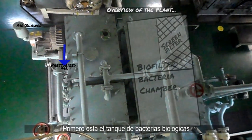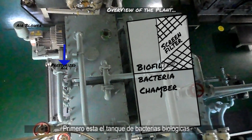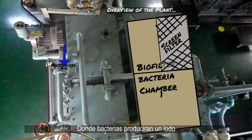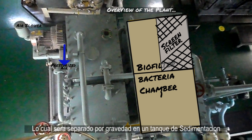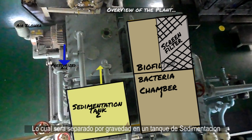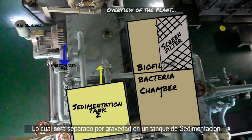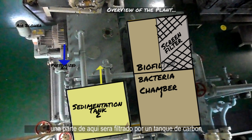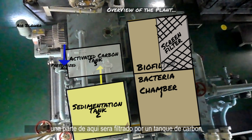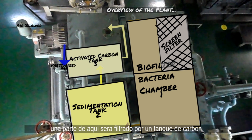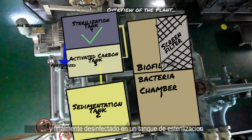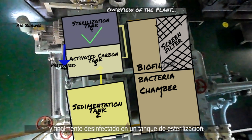First, there's the biofilter bacteria chamber, where bacteria will produce a sludge, which will later be separated by gravity in a sedimentation tank. A part of the sewage will then be filtered by an activated carbon tank, and finally disinfected in a sterilization tank.